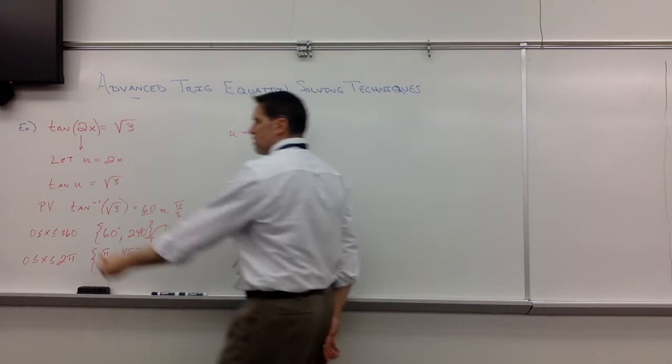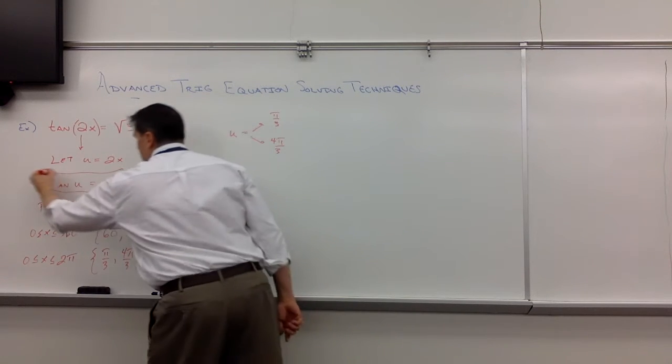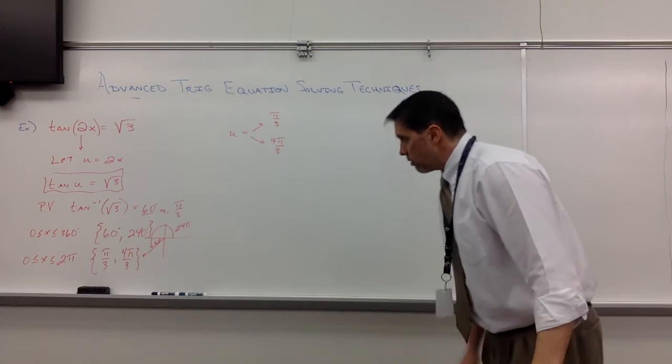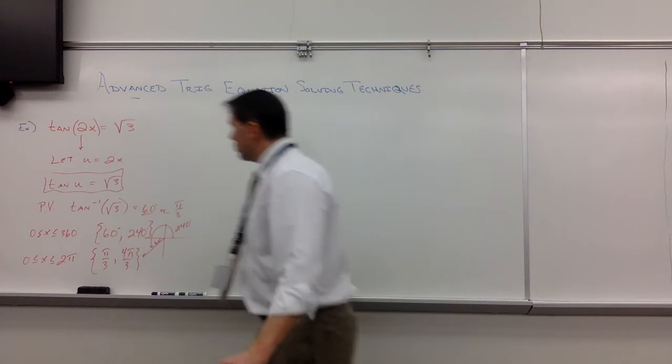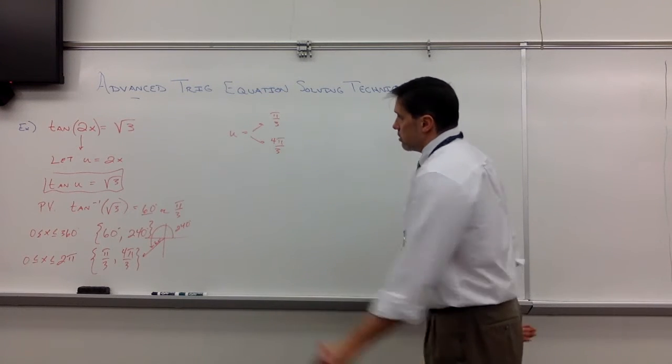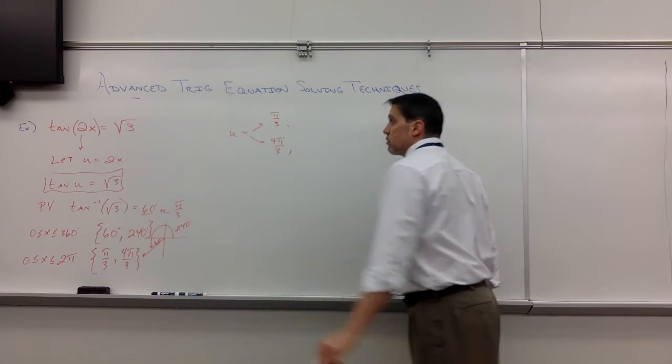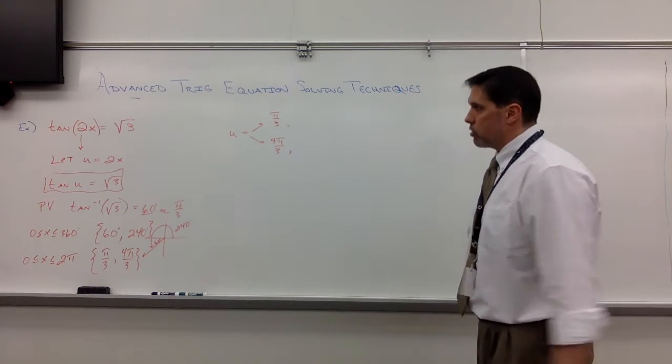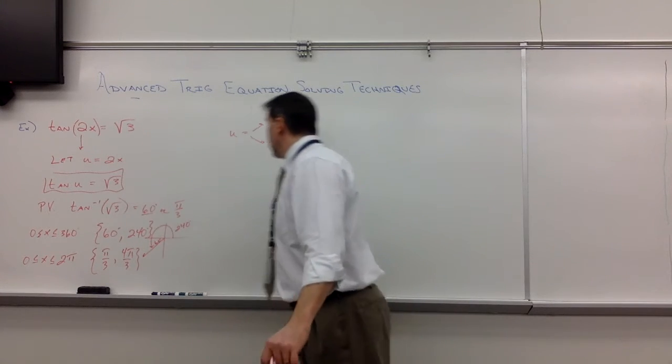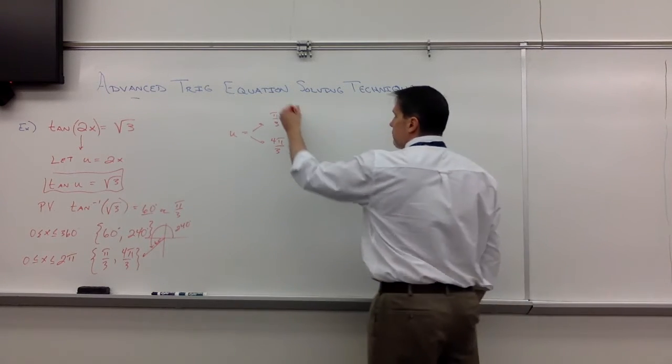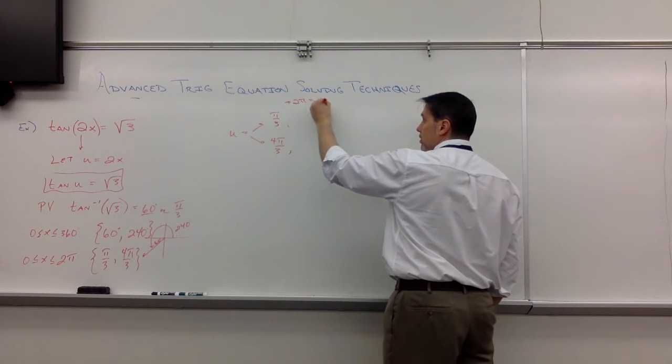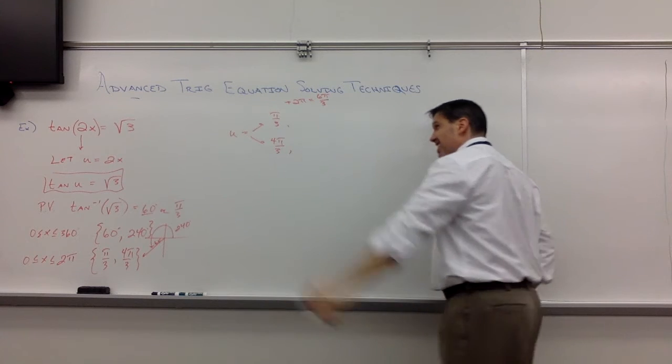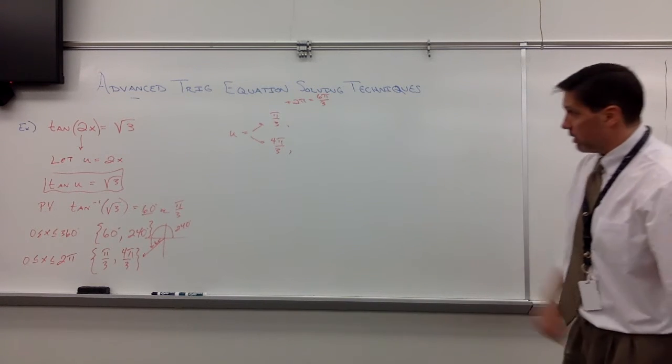But unfortunately, this was not the problem given to us. They didn't say tangent of u equals square root of 3. They said tangent of 2x equals the square root of 3. Well, we let u equal 2x temporarily. Let's start listing some multiples because we've got to change the u back into a 2x here. So, what are we adding? You know, we're adding 2π. A.K.A. In this case, we need a third. Looks like 6π thirds.